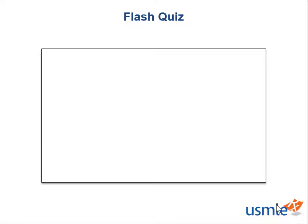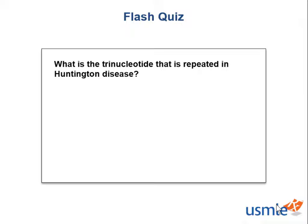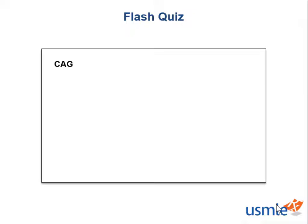Let's do a quiz. What is the trinucleotide that is repeated in Huntington's disease? Great job if you said C-A-G. Remember, the caudate is affected and there is decreased A for acetylcholine and G for GABA.